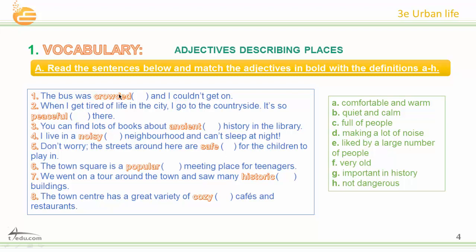Let's check our answers. Number 1: Crowded — C. Peaceful — B. Ancient — F. Noisy — D. Safe — H. Popular — E. Historic — G. And finally, number 8: Cozy — A, comfortable and warm. Very good.